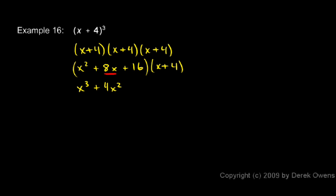Then I'll multiply the 8x by each of those. 8x times x is 8x squared, and 8x times 4 is 32x. Then I'll multiply the 16 by each of those. 16 times x is 16x, and 16 times 4 is 64.